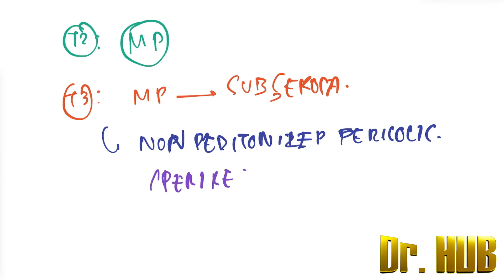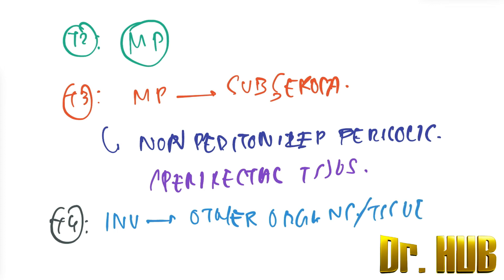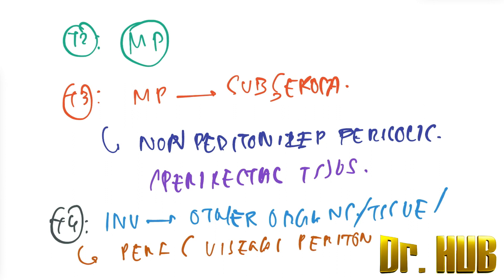T4 means it invades other organs or tissues, or it perforates the visceral peritoneum of the specimen. In the 8th edition, T4 is divided into T4a and T4b.